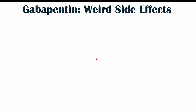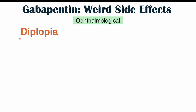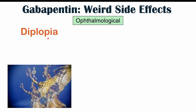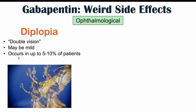Now let's discuss the weird or atypical side effects of gabapentin, broken down by bodily system. The first system is ophthalmological — the eyes. The first side effect is diplopia, which is simply double vision. This can occur in patients taking gabapentin, ranging from mild to more pronounced, and occurs in roughly 5% to 10% of patients, so it's not an uncommon finding.